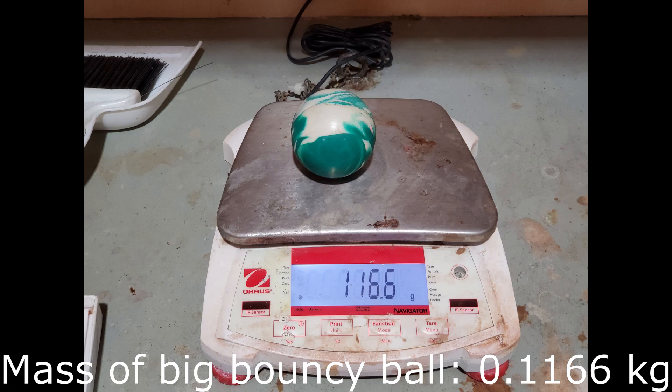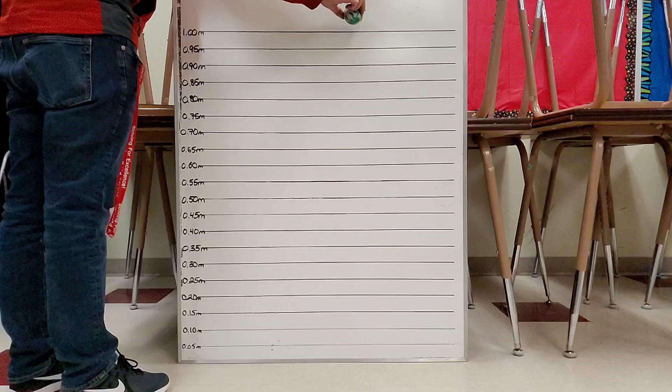Here we have the mass of the big bouncy ball — it's 0.1166 kilograms. The scale is reading in grams, so we're just converting to kilograms. We've got the ball at the one meter line. It's a little bit above because of the camera angle, but I'm trying to drop them all from one meter. So here we go.